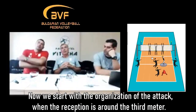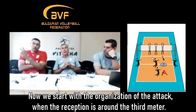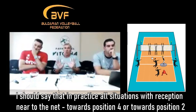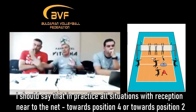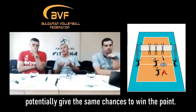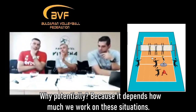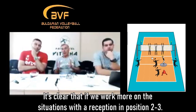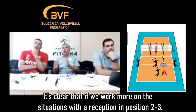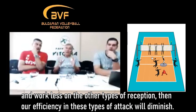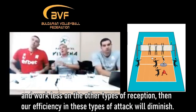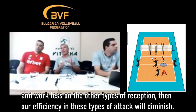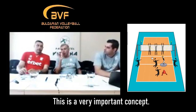Now let's start with the attack when the reception is near or at the top of the 3rd meter. I must also say that practically all situations with reception close to the net, from zone 4 to the extreme zone 2, potentially have the same chances of winning. Why potentially? Because it depends on the amount of work we do on each situation. It is clear that if we work a lot with reception in zones 2 and 3 and work little with other types of attacks, then our efficiency in those types of attacks decreases. This is a very important concept.